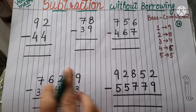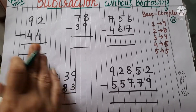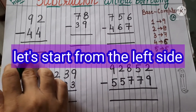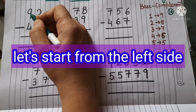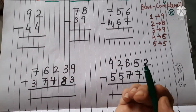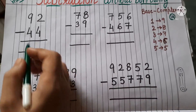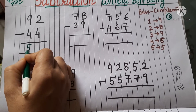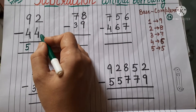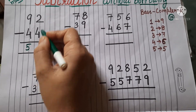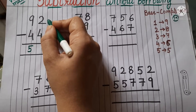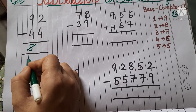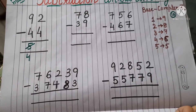Now let's start. We have to start from the left side. Let's do 9 minus 4 — we can subtract: 9 minus 4 is 5. But we can't subtract the next digit: 4 from 2. So what we have to do — we will cut this term and write 4 here, meaning 1 less.